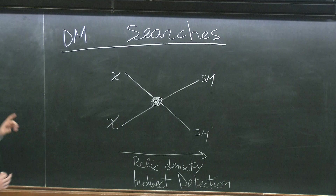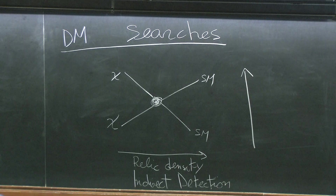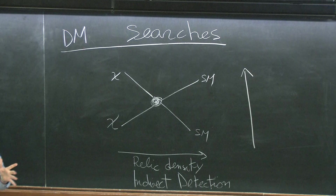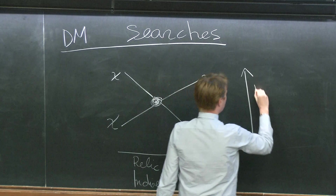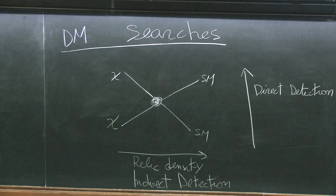Time can actually go in two other ways in this diagram. If you consider time going from the bottom to the top of the blackboard, then you have an elastic collision: a dark matter particle collides with a standard model particle, and in the final state you have the same two states. This is the process probed in direct detection experiments — an elastic collision between dark matter and standard model.